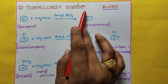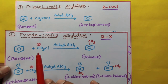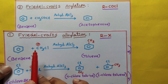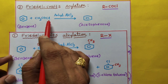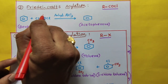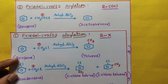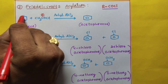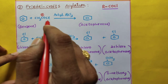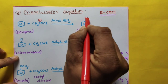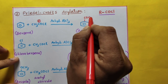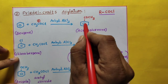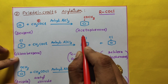Next, Friedel-Crafts acylation. Let us compare. Here the reactant is CH3Cl for alkylation, and here CH3COCl for acylation. In this case CH3CO+ is the acetyl carbocation — it is the electrophile. In benzene, H+ is replaced by CH3CO+. Remember, the carbon has a positive charge. We write COCH3 — you should not write CH3CO, write COCH3. Benzene with COCH3 is named acetophenone.